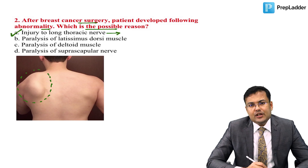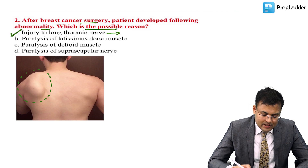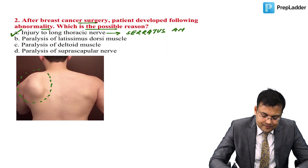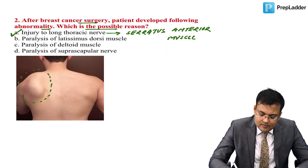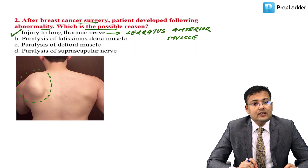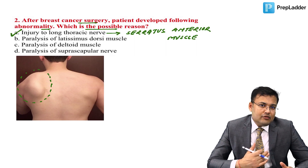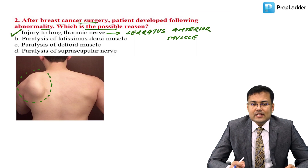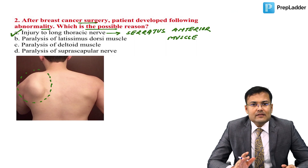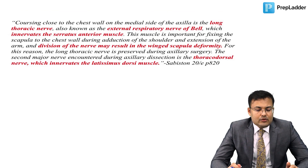When the long thoracic nerve is injured, the patient develops winging of scapula because this nerve supplies the serratus anterior muscle. The correct answer is winging of scapula due to injury of the long thoracic nerve. There are two nerves commonly injured during mastectomy: the long thoracic nerve and the thoracodorsal nerve.